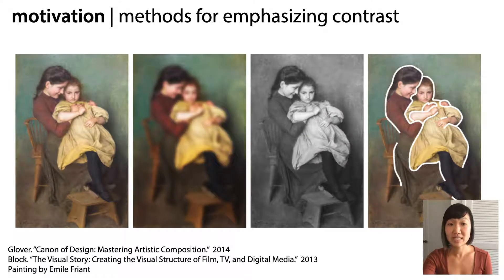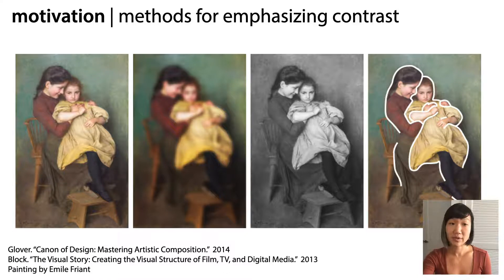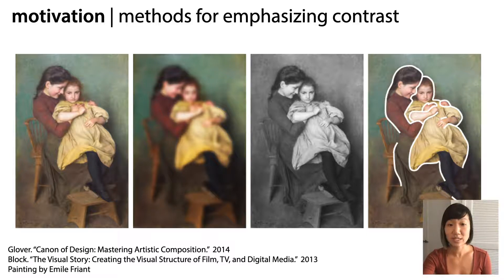Photographers recommend a number of methods to be able to more easily see the contrast in an image. For example, they recommend squinting at the image to see a blurred and higher contrast version of the image, or looking at the image in grayscale to focus on contrast without aspects of color.